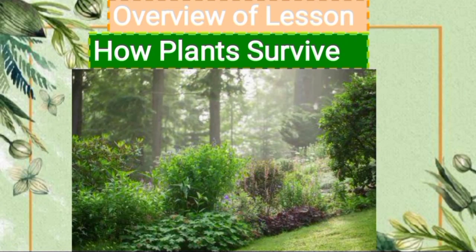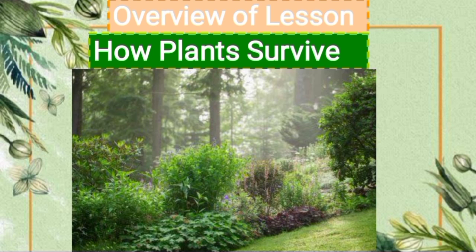How Plants Survive. As you know, plants growing in different regions differ from one another. The place where a plant naturally lives and grows is called its habitat. For example, a desert is a habitat for cactus. Plants have some special features that allow them to live in a particular habitat or situation, and these special features are called adaptation.